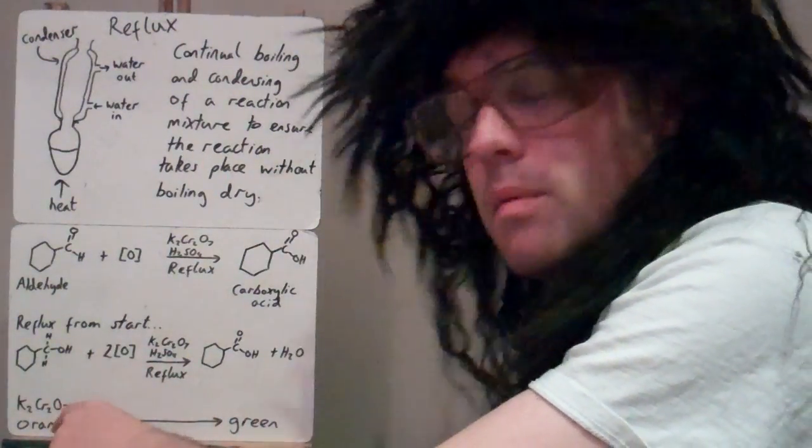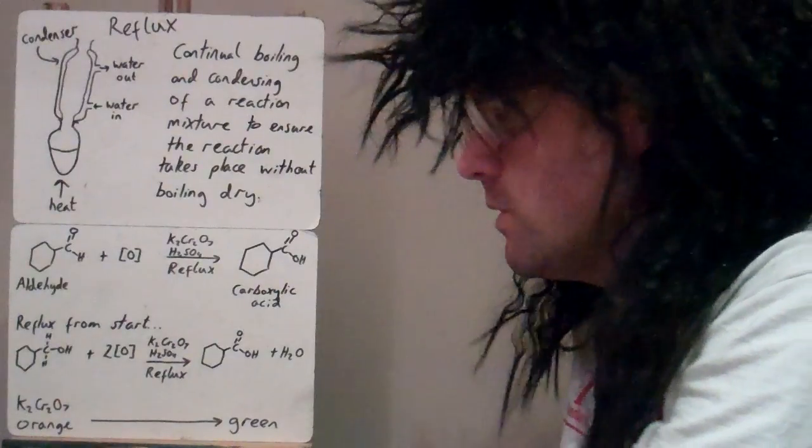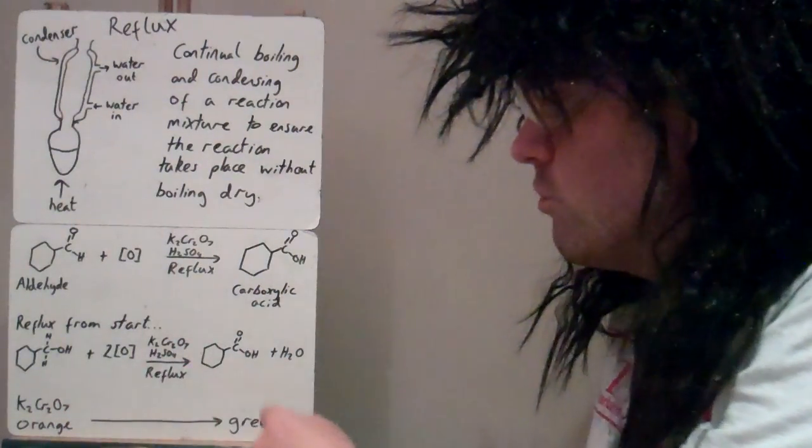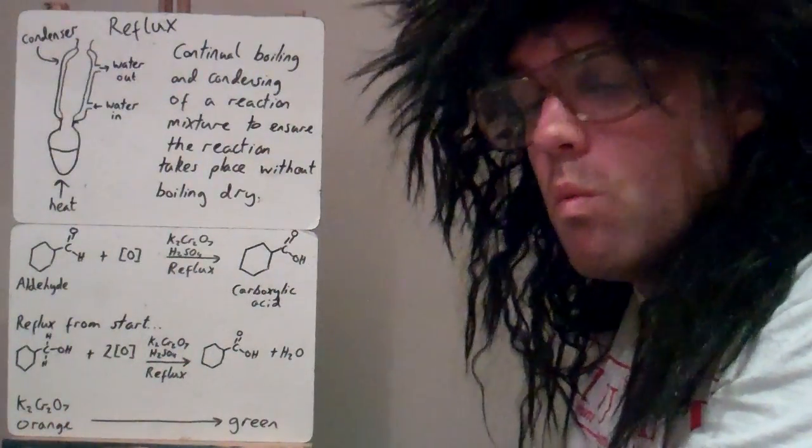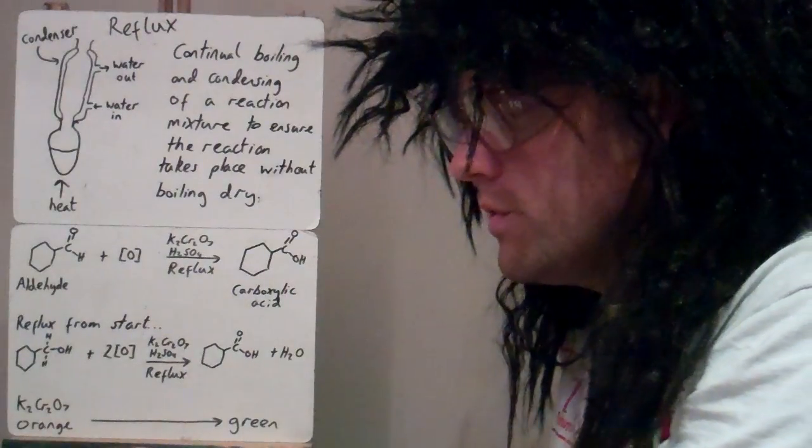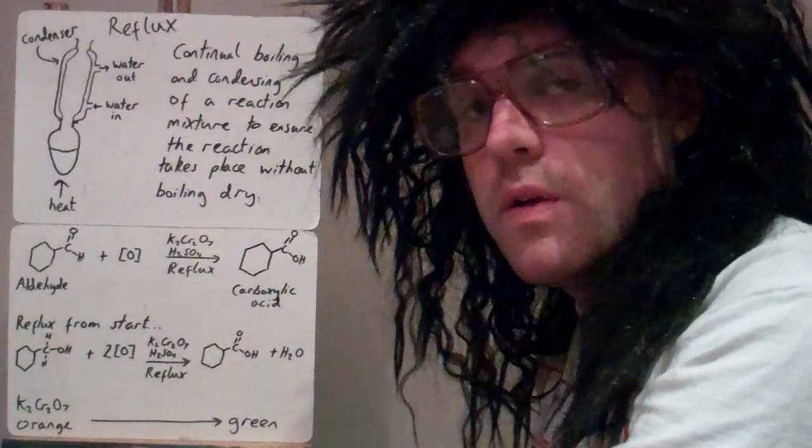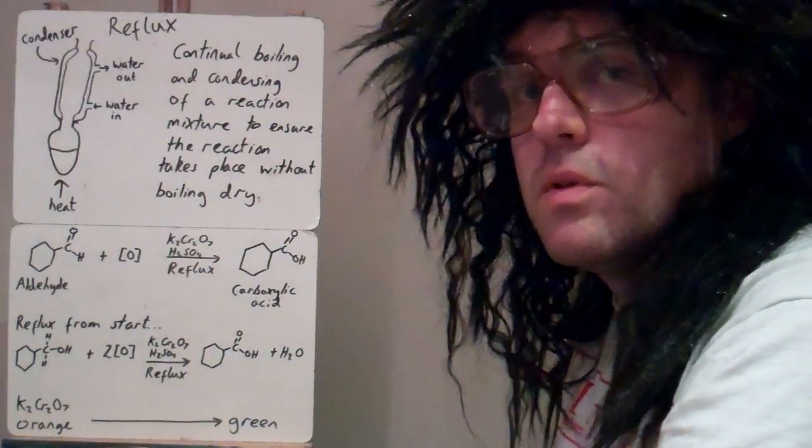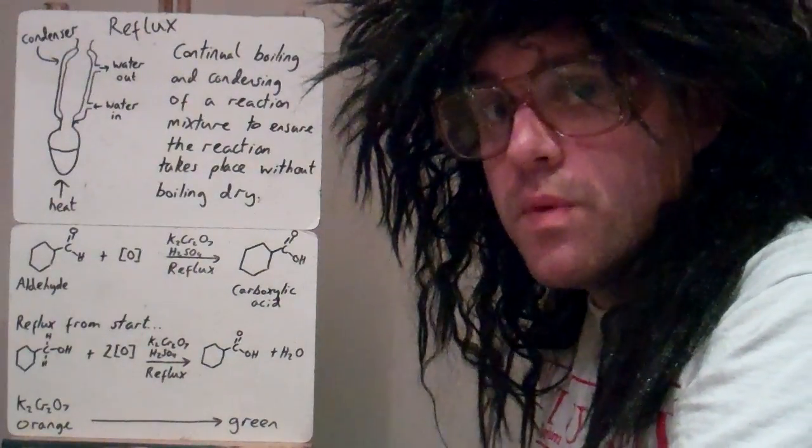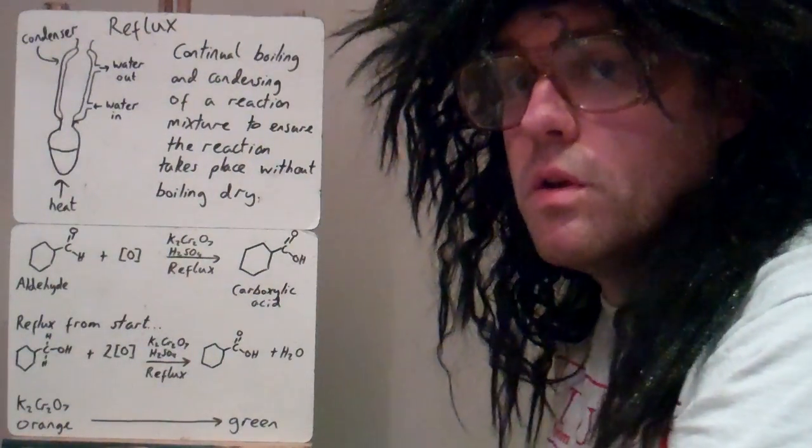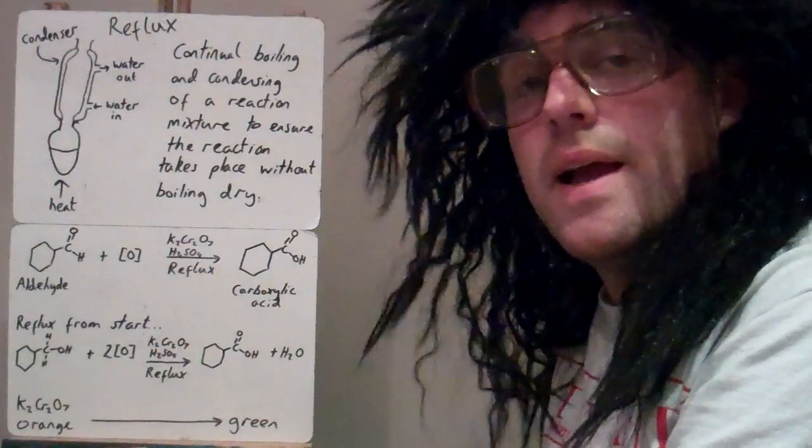In all these reactions, the same thing happens to the potassium dichromate. Every time there's an oxidation, it goes from orange to green. So what we see overall in this video then, is that primary alcohols, if they're distilled with potassium dichromate, they make aldehydes. If they're refluxed with potassium dichromate, they make carboxylic acids.